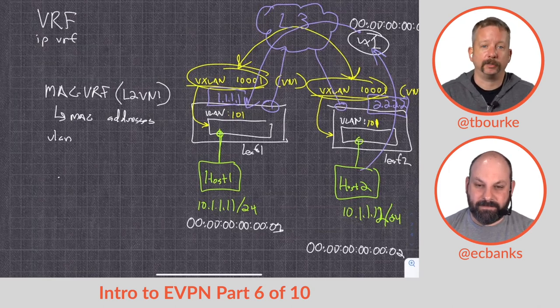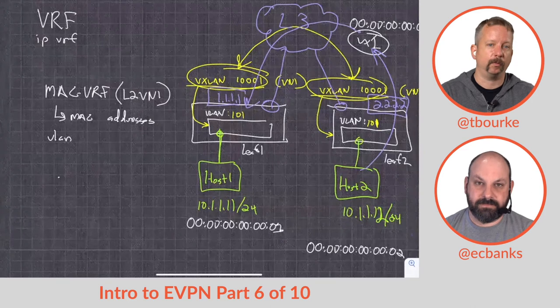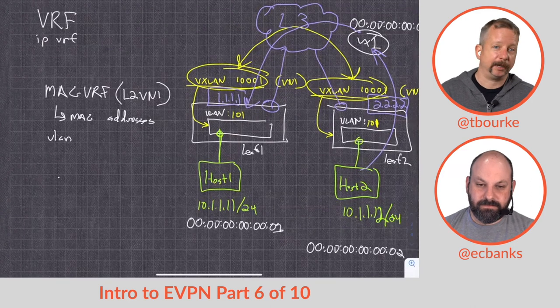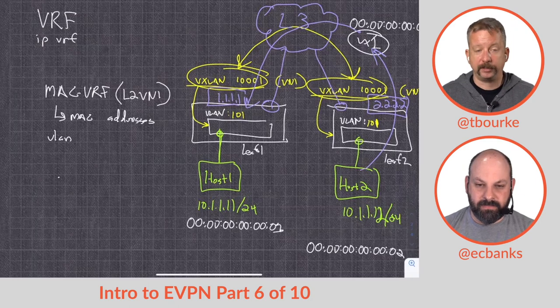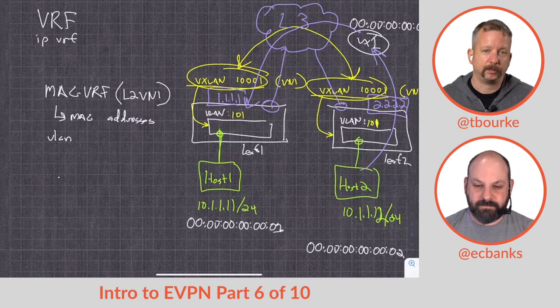LAG was meant to allow more than one path to be active at the same time by taking two or more physical paths and turning it into one logical path—kind of tricking Ethernet. We're not tricking spanning tree, we're tricking Ethernet.